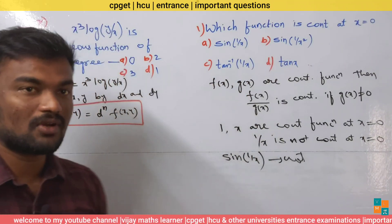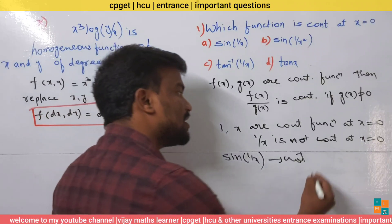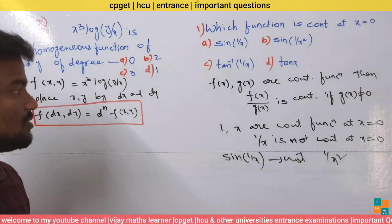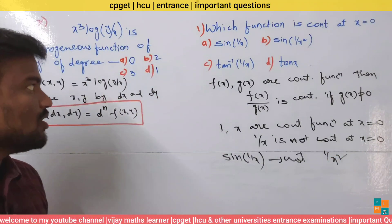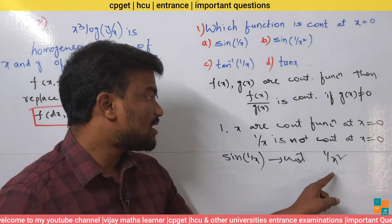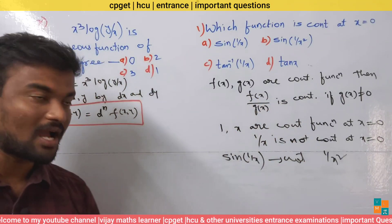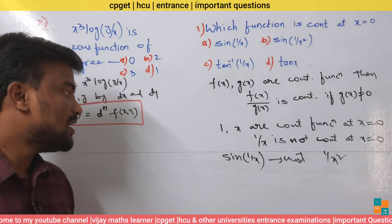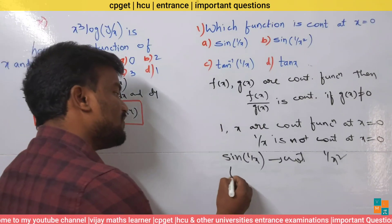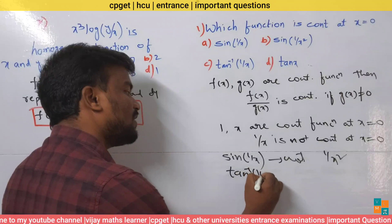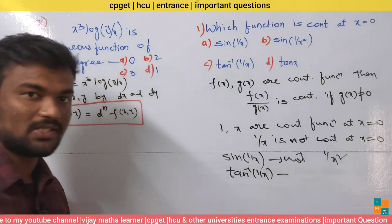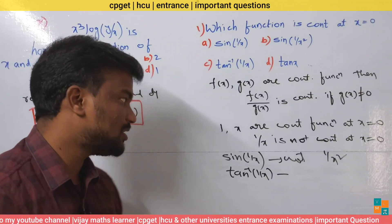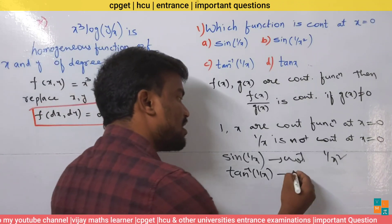Option B: sin(1/x²). Since 1/x is not continuous, 1/x² is also not continuous at x equals 0. Sine is continuous, so the composition sin(1/x²) is also not continuous. Option C: tan⁻¹(1/x). Tan inverse is a continuous function, but 1/x is not continuous, so the composition tan⁻¹(1/x) is also not a continuous function.